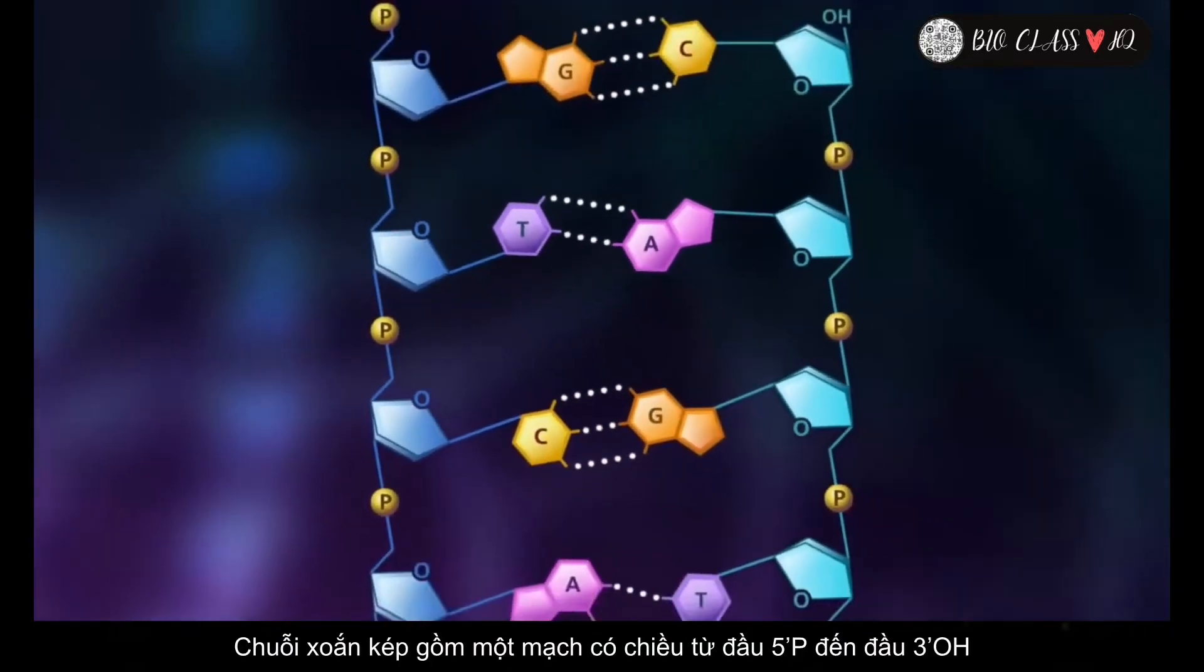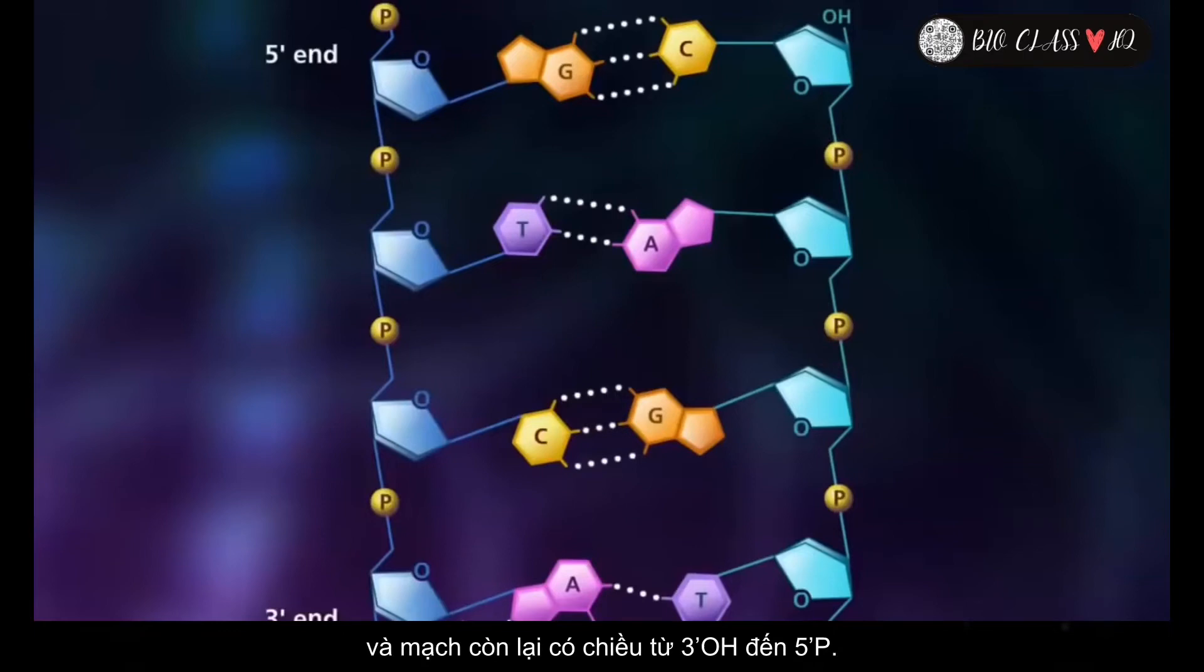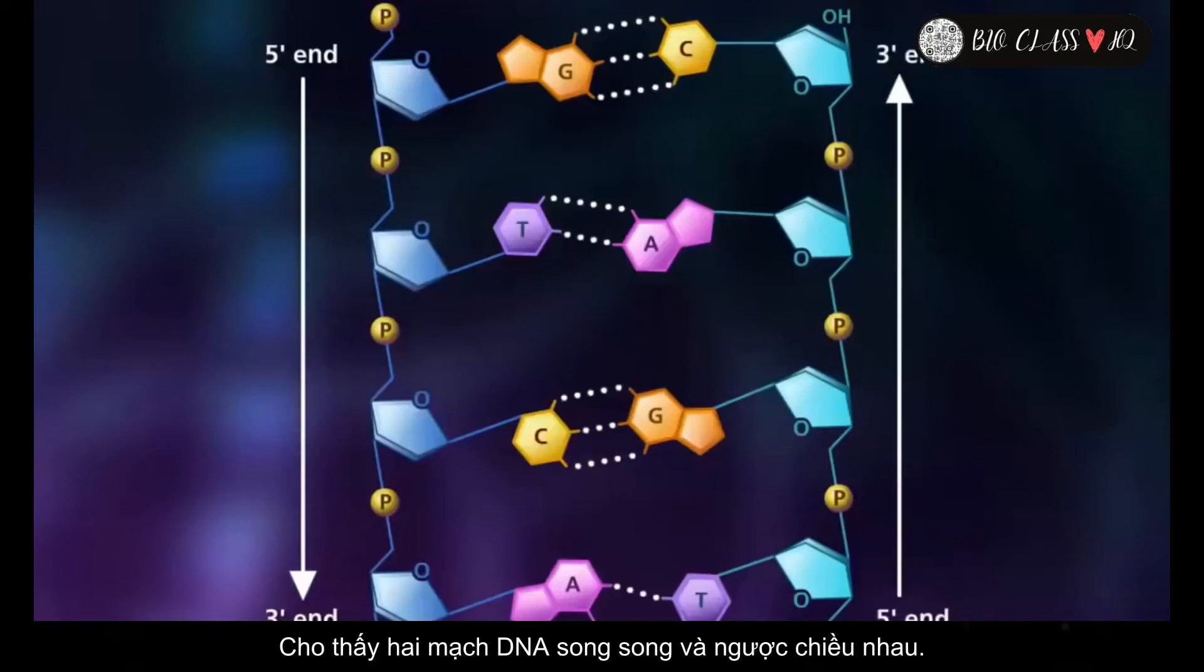The double helix will have one strand oriented in a 5' to 3' direction relative to the hydroxyl group of the deoxyribose sugar, and the other strand oriented in a 3' to 5' direction. This shows the anti-parallel nature of the DNA strands.